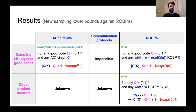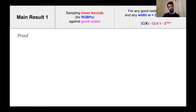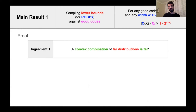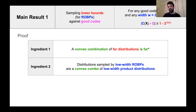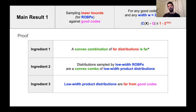In the remainder of this talk, I'll provide proof sketches of our two main results. We'll start with our sampling lower bounds against good codes. The proof relies on three key ingredients. The first ingredient roughly says that a convex combination of distributions, each far from some target distribution Q, is itself far from Q. The second ingredient says that distributions sampled by low-width ROBPs are a convex combination of so-called low-width product distributions. The third ingredient, the main one, says that low-width product distributions are far from good codes.